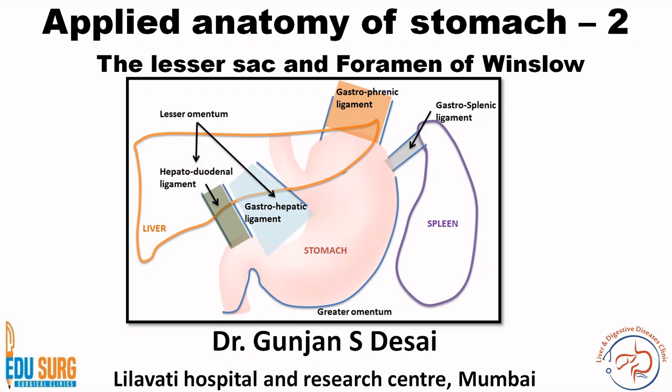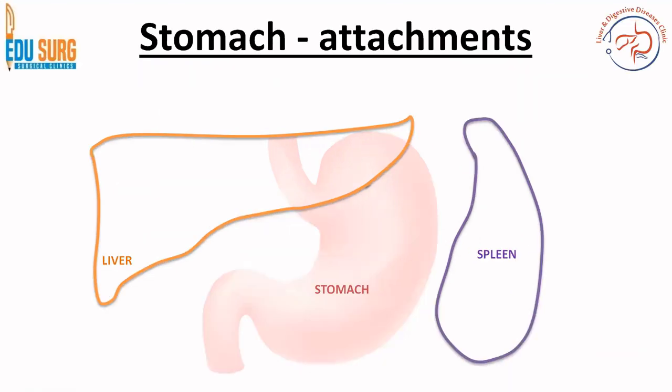Today we are going to discuss the relations of stomach with the surrounding organs — how it is attached to liver, the spleen — the basic anatomy that you know, and how all that makes sense in understanding the very complex structure known as the lesser sac and the foramen of Winslow. Let us understand the very basic attachments of stomach.